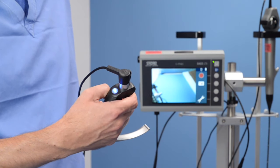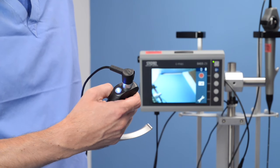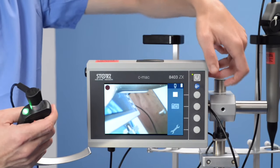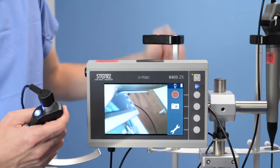The CMAC video laryngoscope allows the user to take pictures. This can be activated by this blue button here, or on the main screen by a separate user.